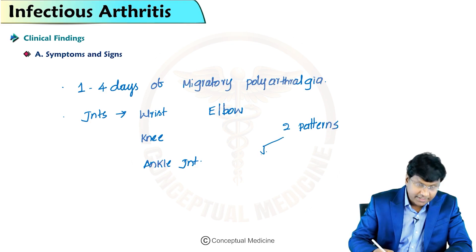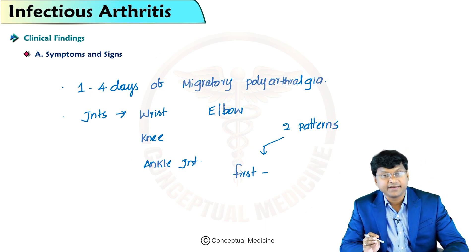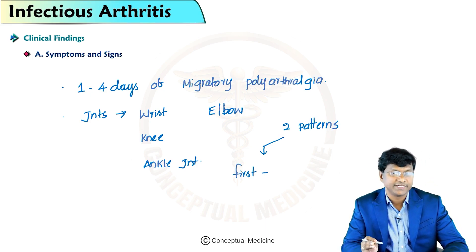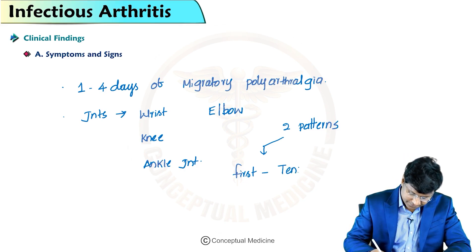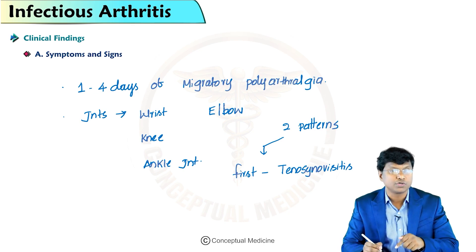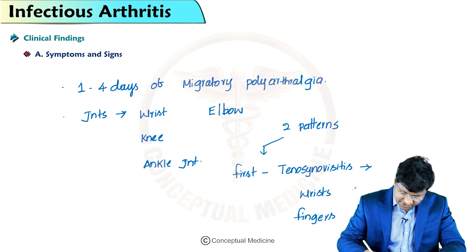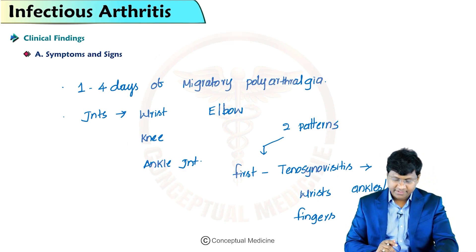There are two patterns that emerge. The first pattern is characterized by tenosynovitis, which most often affects the wrist, fingers, ankles, and toes. These are the structures affected by tenosynovitis.